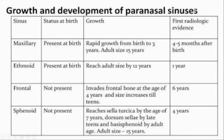To summarize the growth and development of paranasal sinuses: the maxillary and ethmoid sinuses are both present at birth. The maxillary sinus rapidly grows from birth to 3 years; adult size is reached by 15 years, and it is radiologically first visible by 4 to 5 months after birth. The ethmoid sinus reaches adult size by 12 years and is radiologically first visible by 1 year. Both frontal and sphenoid sinuses are absent at birth. The frontal sinus invades the frontal bone at the age of 4 years and size increases till the teens; first radiological evidence is seen by 6 years. The sphenoid sinus reaches the sella turcica by the age of 7 years, the dorsum sellae by late teens, and the basi-sphenoid by adult age; adult size is reached by 15 years and it is radiologically first visible by 4 years.